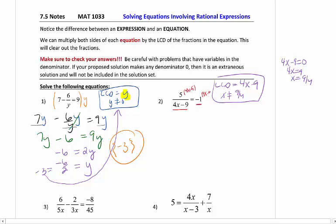I'm now going to multiply each term by the 4X minus 9. 4X minus 9 on the left-hand side, 4X minus 9 on the right-hand side. These 4X minus 9s cancel. I'm left with a 5 on the left-hand side. Be careful. Probably most common mistake here is to not distribute that negative across. So I end up with a negative 4X plus 9.